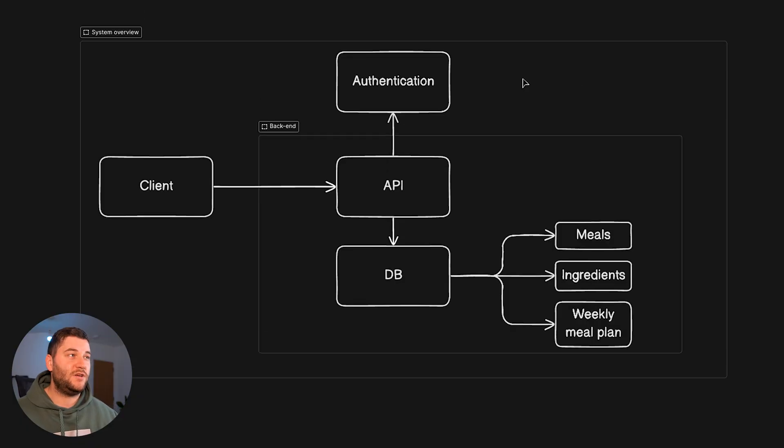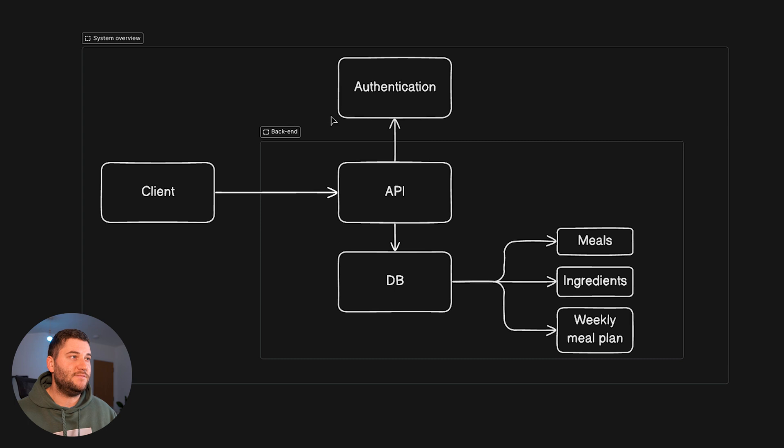Let's dive into the first, which is the system level design. I think this is a great place to start thinking about architecture for any application. At the moment I don't really have all the details for each of the requirements. I know that I want to have meals, ingredients, and a weekly plan, and I want to get a grocery list, and I want to have CRUD operations probably for each of those entities.